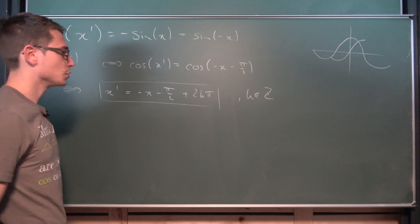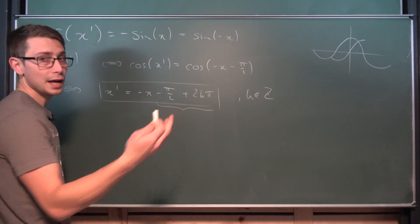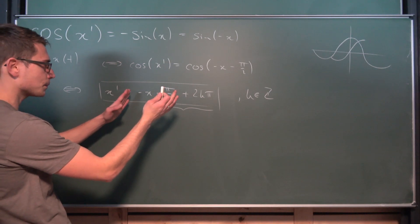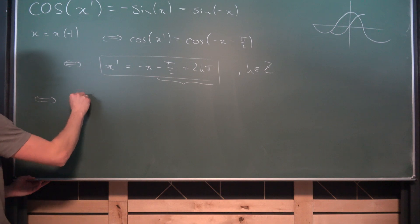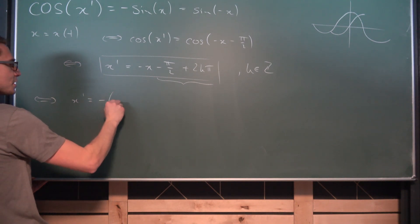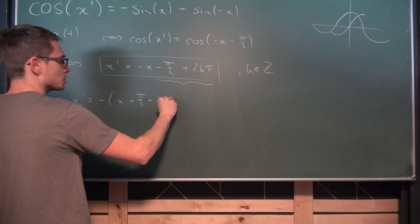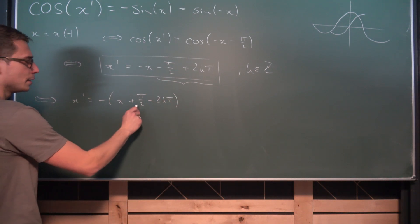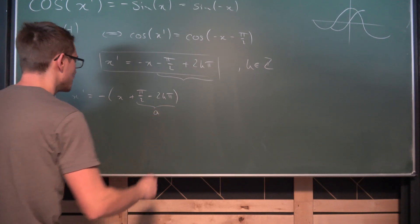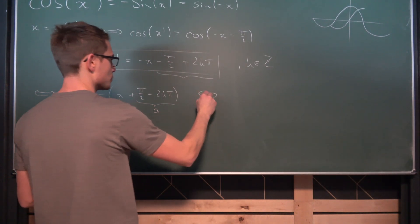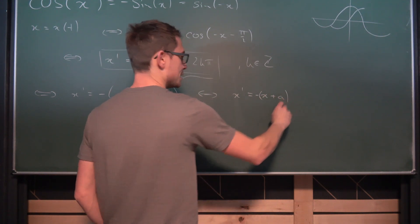And what I'm going to do now is I'm just going to call this factor that we have right here a overall. But we are going to factor out a negative sign at first. So this makes it a bit easier. So x prime is hence equal to negative x plus pi over two minus two k pi. Now this part right here as I just mentioned I'm now going to call it a. So we are going to end up with a certain differential equation namely that x prime is equal to negative x plus a.